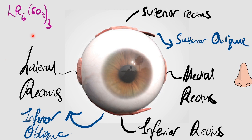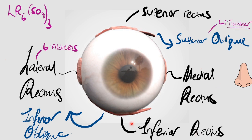Please remember your cranial nerves because they're important. Then SO4 - so superior oblique, which pulls your eye downwards and intorts it, is innervated by your trochlear nerve, so nerve 4. And everything else - so superior rectus, medial rectus, inferior rectus, inferior oblique - are all innervated by nerve 3.